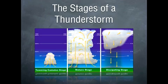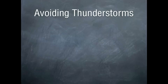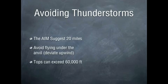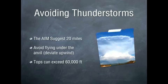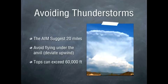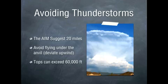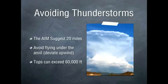Lastly, it is known as the dissipating stage — this is when the storm begins to rain itself out. For avoiding thunderstorms, you'll find in the AIM that it suggests you avoid any thunderstorm by at least 20 miles. Also, avoid flying underneath the anvil of a thunderstorm — in other words, deviate upwind. You don't want to go around a thunderstorm downwind, because chances are it'll catch up with you. Underneath the anvil, you can experience large hail and other hazards. Remember, these tops can exceed 60,000 feet, so don't ever try to fly over a thunderstorm.